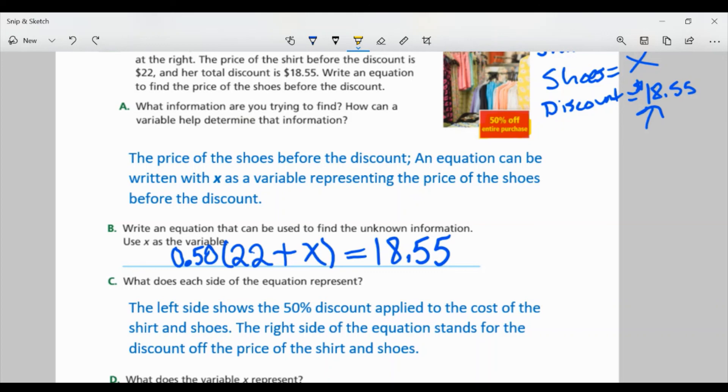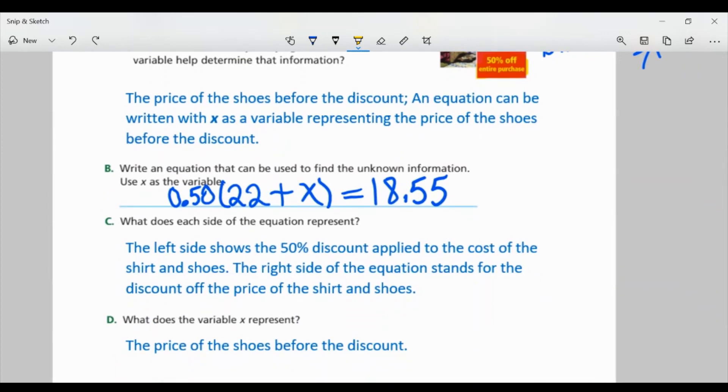Now, part D, what does the variable X represent? Well, X represents the price of the shoes before the discount because we don't know what it is, right? That's what we're trying to figure out. So that's why we use the variable because it's an unknown value.